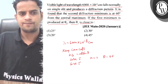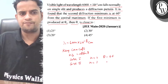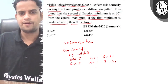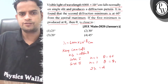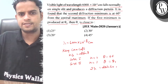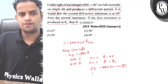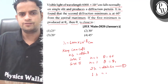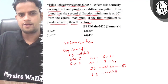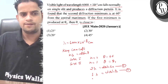When n equals 2: 2λ = d sin60°. This is your first equation. And when n equals 1: 1 × λ = d sinθ₁. This is your second equation.